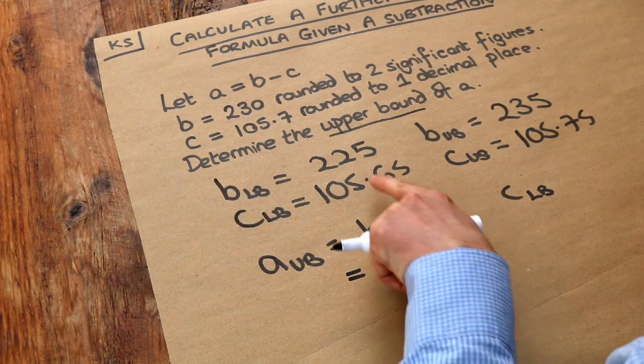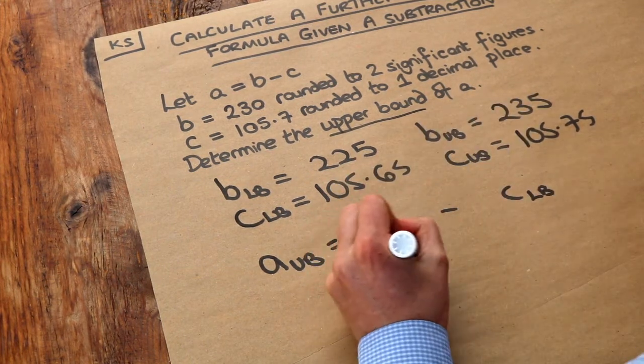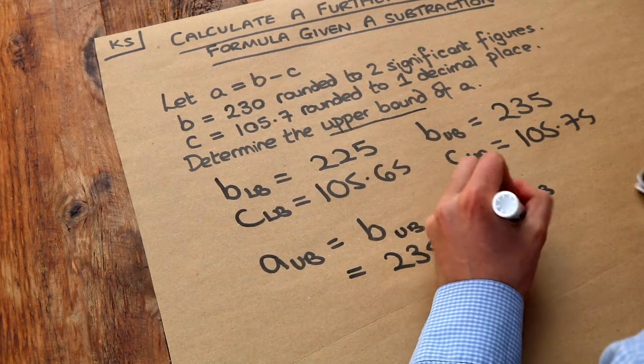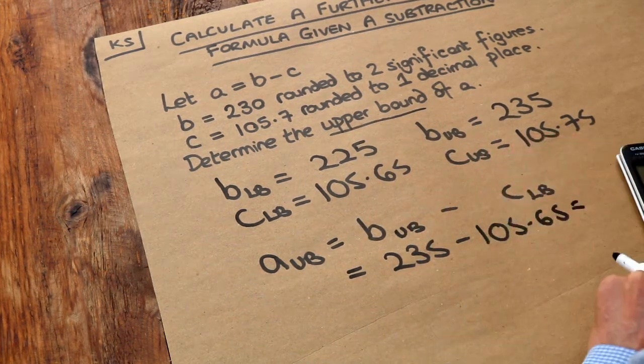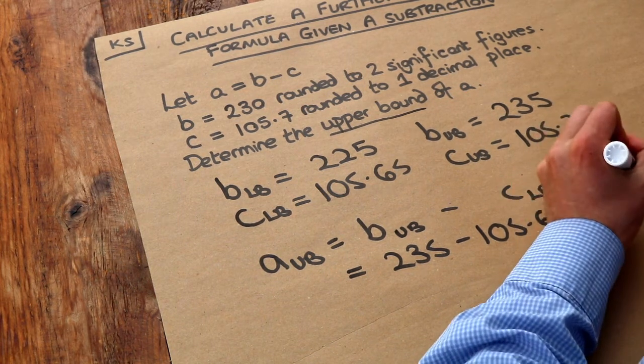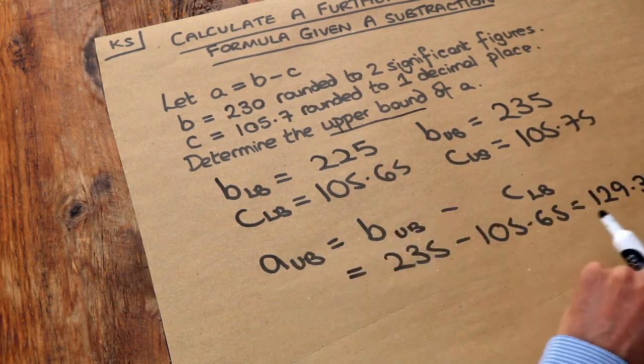So the upper bound for B was 235 and the lower bound for C was 105.65 and if we do that on our calculator we get 129.35. So that's the biggest A could have possibly been.